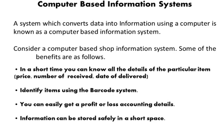A system which converts data into information using a computer is known as a computer-based information system. Consider a computer-based shop information system. Some benefits are: in a short time, the shop owner can know all details of a particular item such as price, number received, and date of delivery. Items can be identified using a barcode system. You can easily get profit or loss accounting details, and information can be stored safely in a short space.